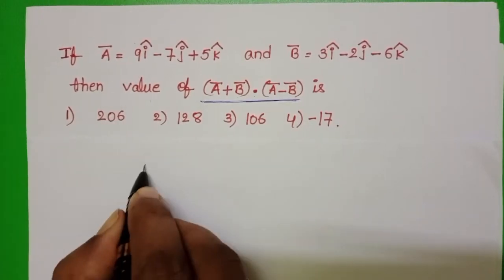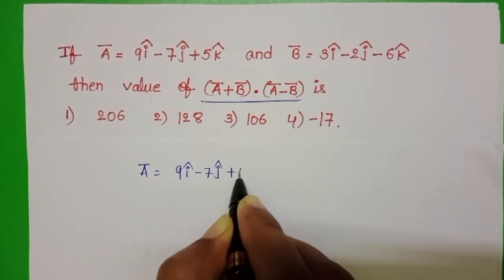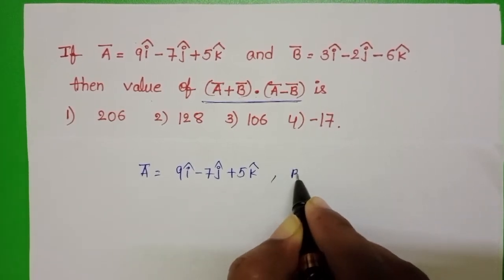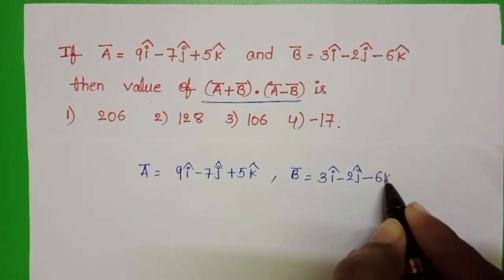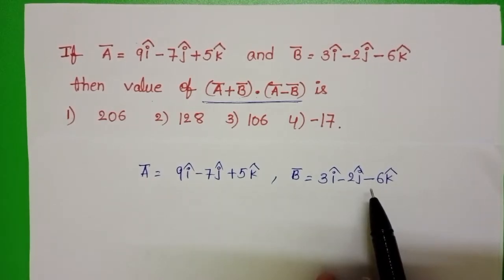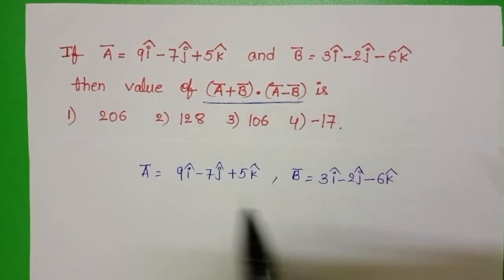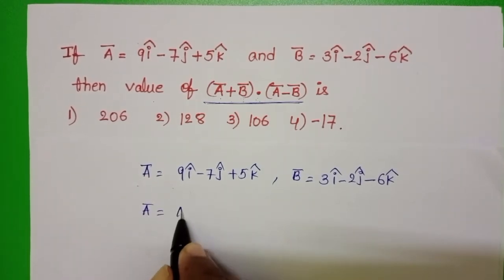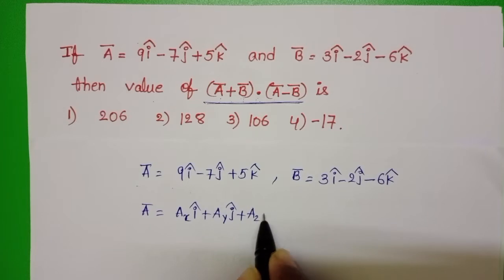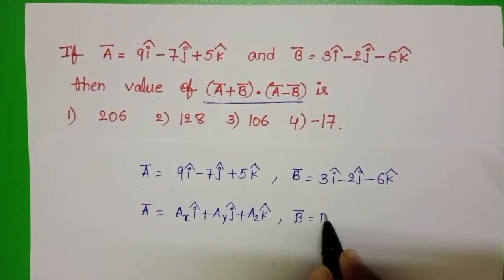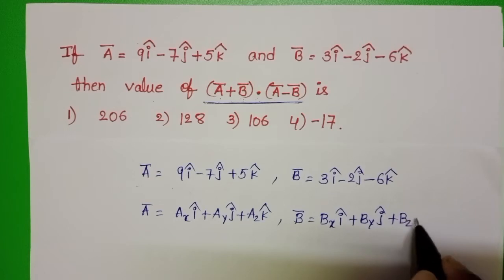If ā equals 9î minus 7ĵ plus 5k̂, this is the given vector, and b̄ equals 3î minus 2ĵ minus 6k̂. So these two are the given vectors. A vector is like ax·î plus ay·ĵ plus az·k̂, and similarly b̄ is bx·î plus by·ĵ plus bz·k̂.